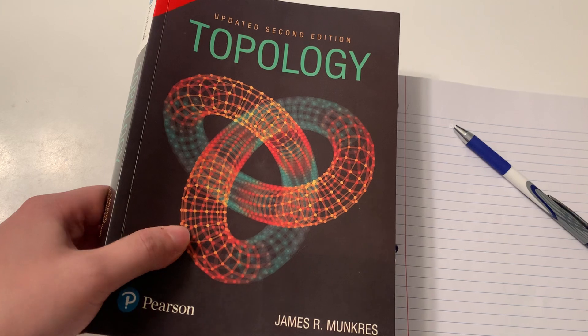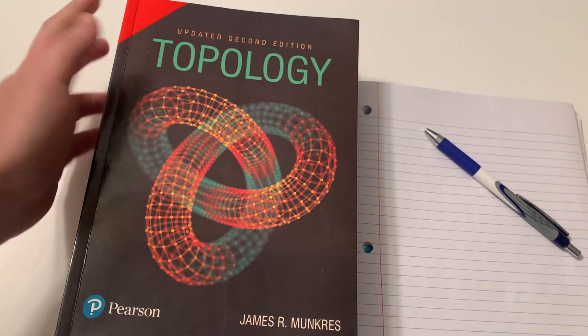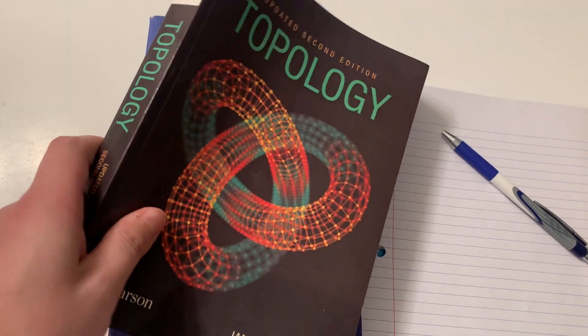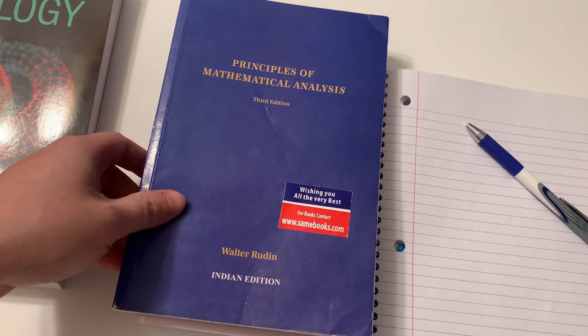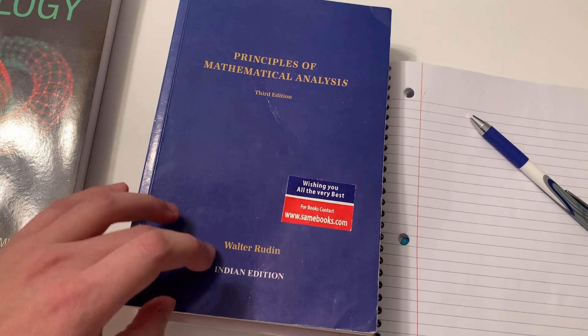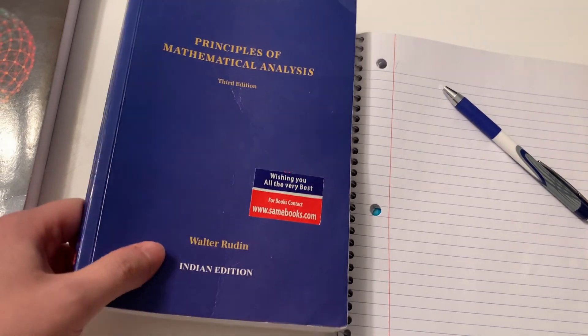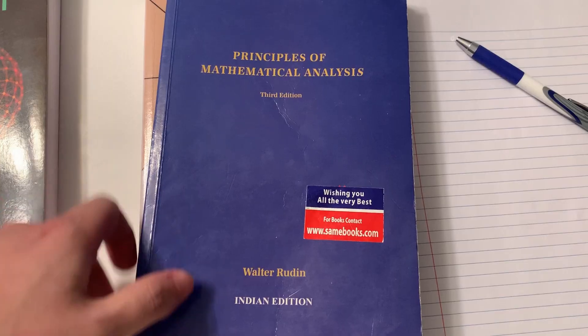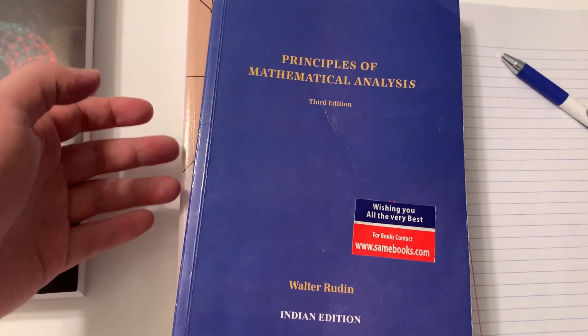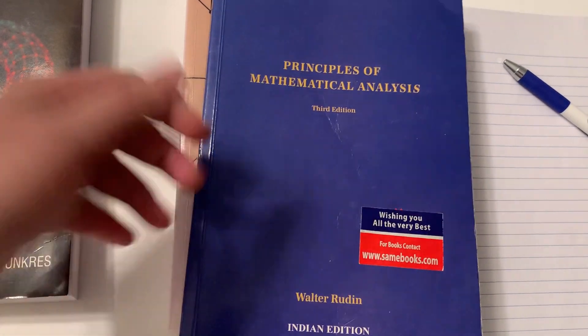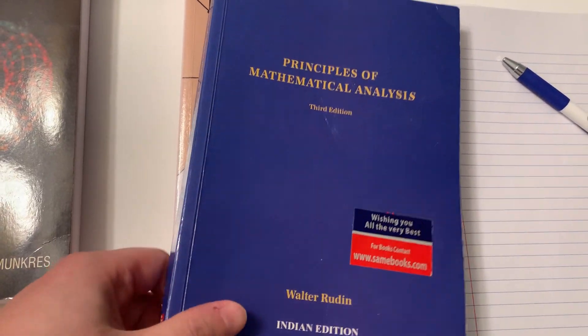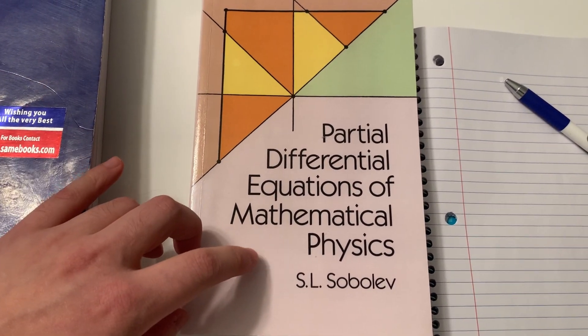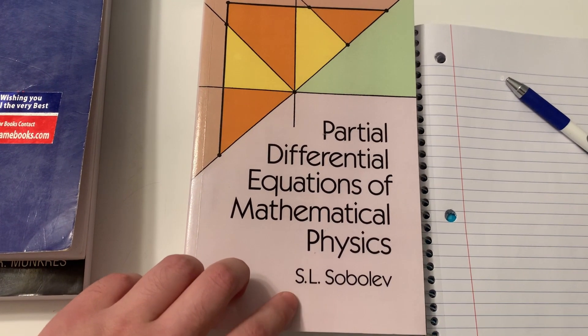So here I have three textbooks. The first one is called Topology by James Munkres. This is a legendary topology book, highly recommended. And the second is once again Principles of Mathematical Analysis by Walter Rudin, colloquially known as Baby Rudin. This is a textbook that is so famous that it got its own nickname. It has been featured twice already on this channel, and I guarantee you there will be many more times to come. And the last one is called Partial Differential Equations of Mathematical Physics, written by the Soviet mathematician Sergei Sobolev.